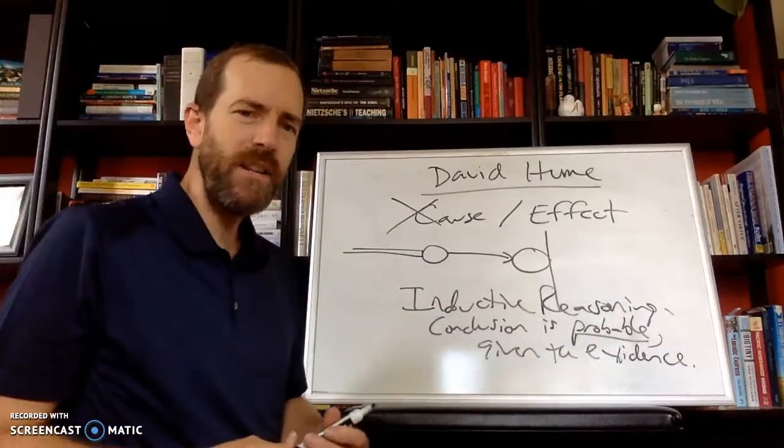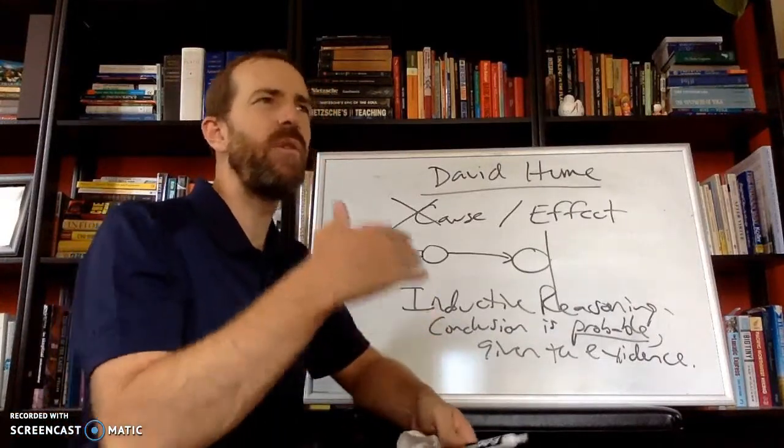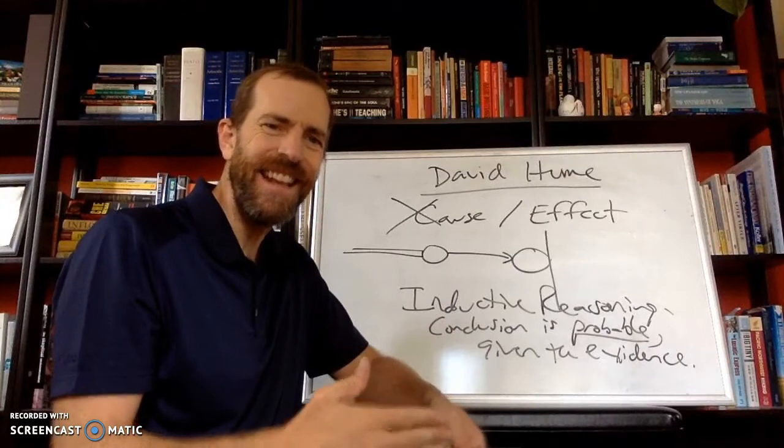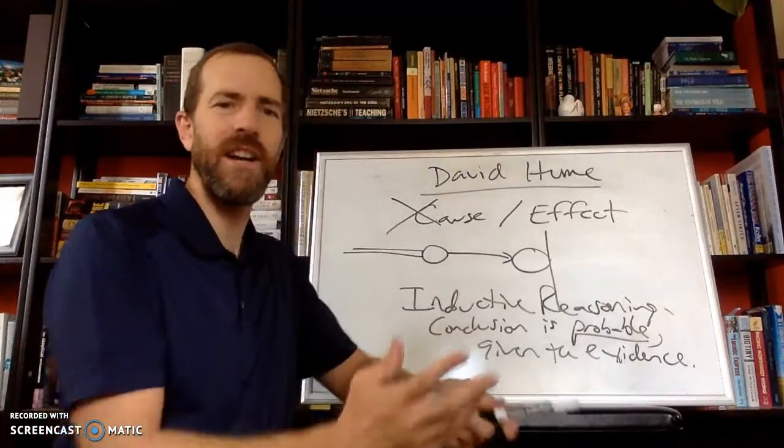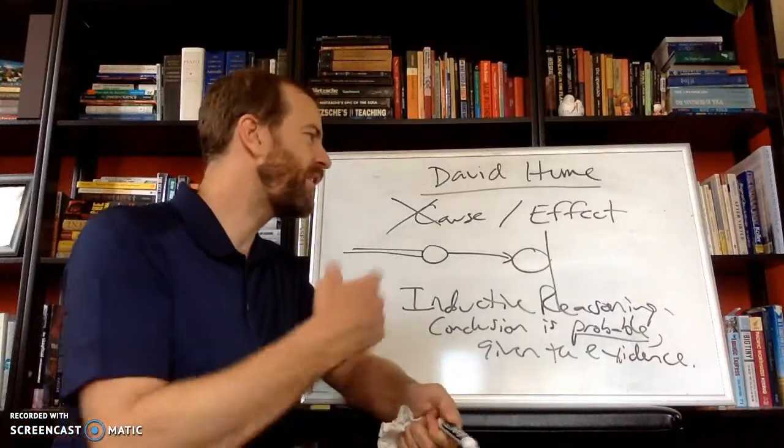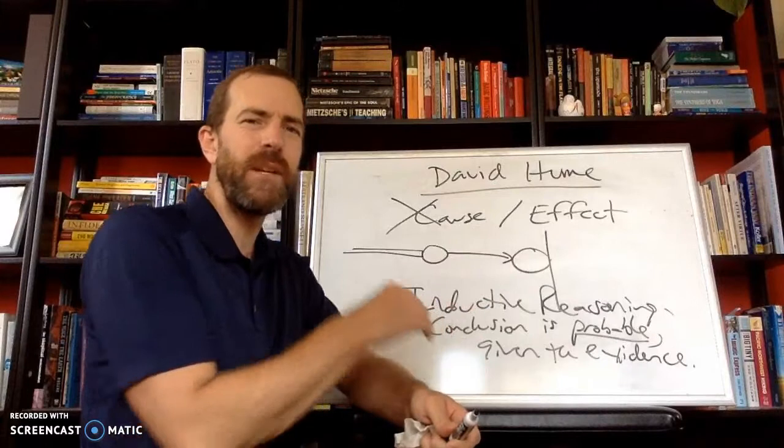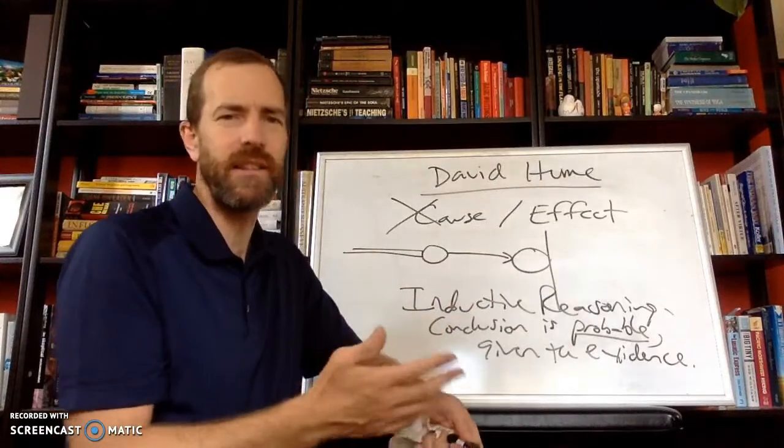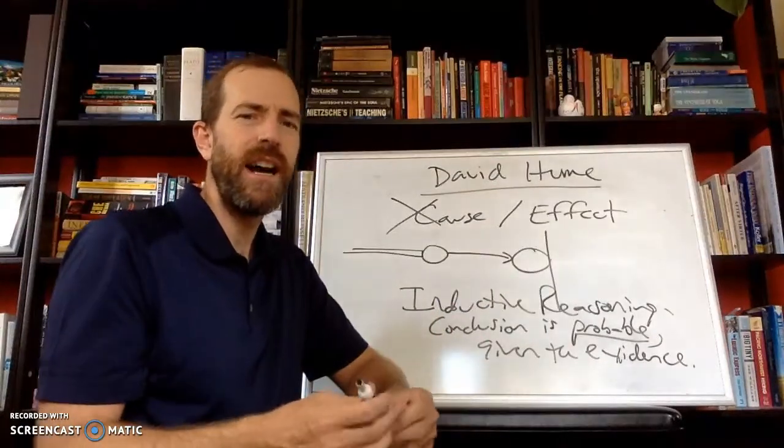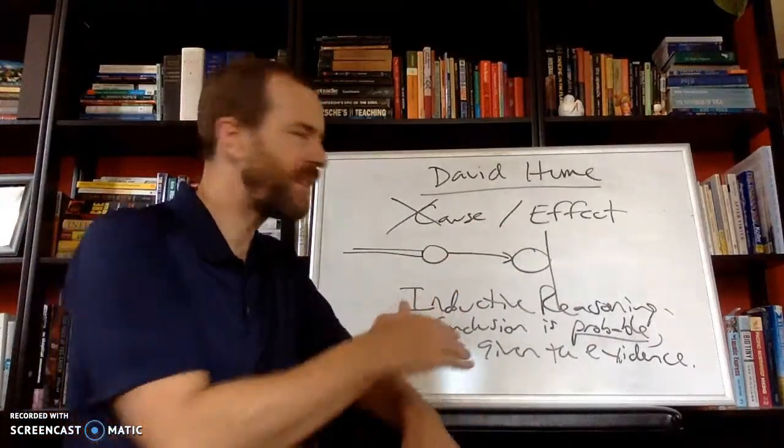And when you know something is probable, according to David Hume, you don't know it, because knowledge requires 100% certainty, not probability. So we don't actually know that two things are causally related. We don't know that anything is causally related to another because our theory of cause and effect is based on probability.